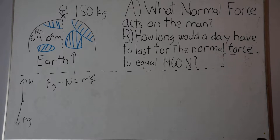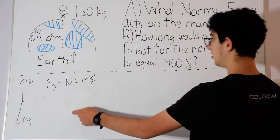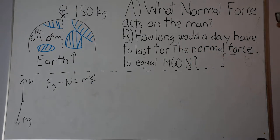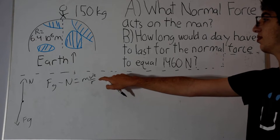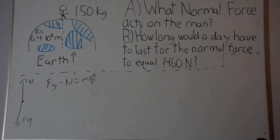Looking at this equation, I can see that we have the force of gravity, we know that the normal force is our variable, and we know the radius of the earth, but we don't know what the velocity is. So let's think. How can we find what the velocity is equal to?